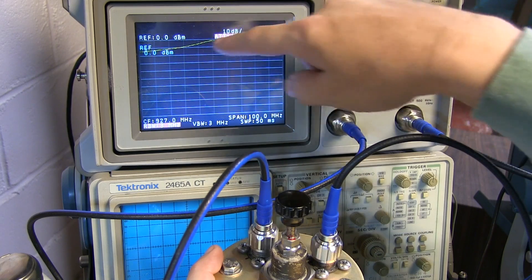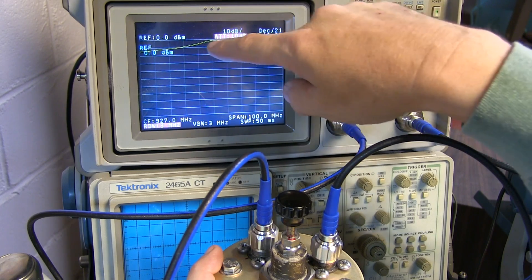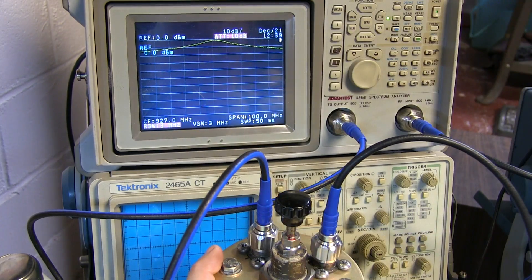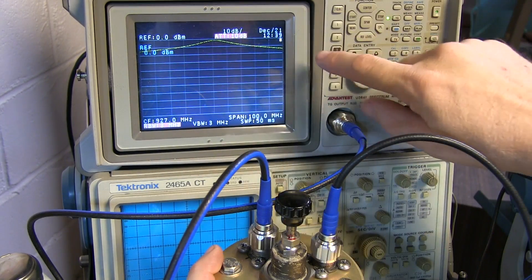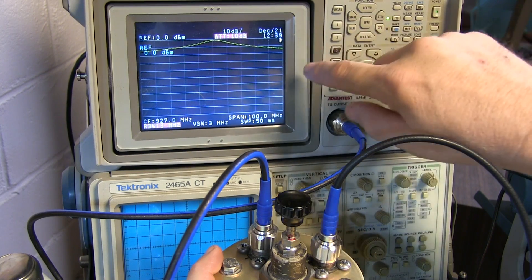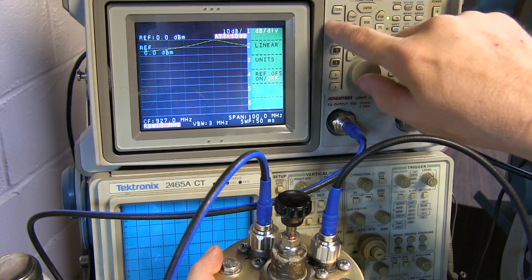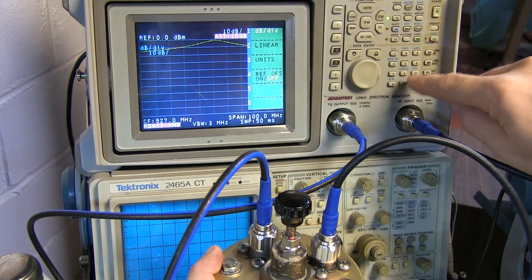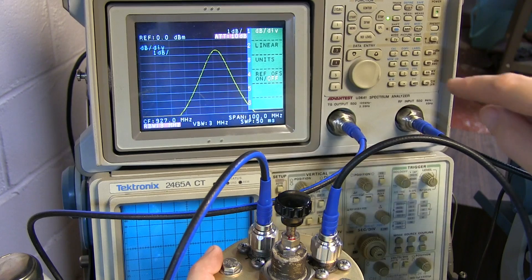Now it's kind of flat, it's kind of shallow, it's difficult to see where the actual peak or the center frequency of the filter is. So we can actually stretch this plot out first by changing the number of dB per division, stretching that out, and go down to 1 dB per division.